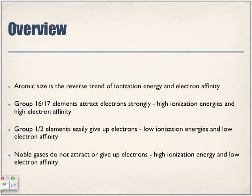Group 16 and 17 elements attract electrons strongly, thus resulting in a high ionization energy. They're less likely to want to give up the electron, but because they're less likely to want to give up an electron, they're going to have a high affinity for an electron because they want to pick up those electrons to become stable.